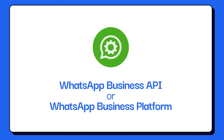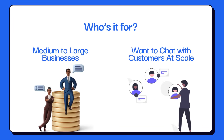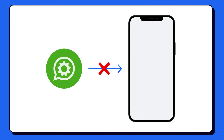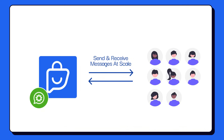The WhatsApp Business API, also known as the WhatsApp Business Platform, is designed for medium to large businesses that need to chat with leads or customers on WhatsApp at scale. Unlike the regular WhatsApp or the WhatsApp Business app, the API does not have a user interface — instead, it needs to be connected to a messaging software like Spur to send and receive messages.